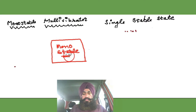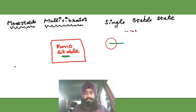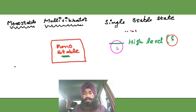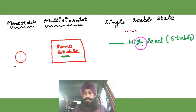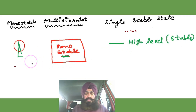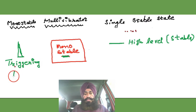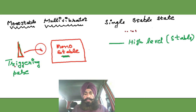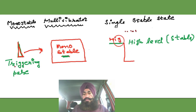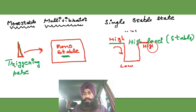Now let's think about the case where the monostable is having a high level as its stable level. We are giving a triggering pulse. The trigger will shift it from the high level to low. But low is not the stable one, so it comes back to the high level again.